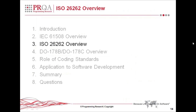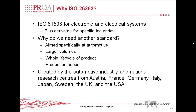Let's look at one of the derivative standards for ISO 26262. We had IEC 61508 which covered electronic and electrical systems, but ISO 26262 is aimed specifically at the automotive industry and covers the whole product life cycle including a production aspect. ISO 26262 has been created by a number of national research centres across Europe and the world within the automotive industry.